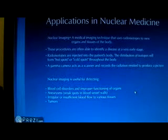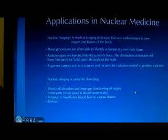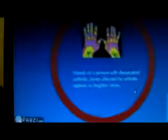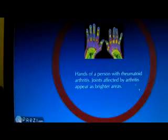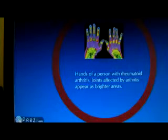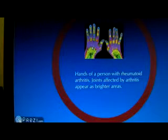Nuclear imaging is also useful for detecting blood cell disorders and improper functioning of organs, aneurysms — which are weak spots in the blood vessel walls — irregular blood flow to various tissues, and tumors. As you can see in this picture, these are the hands of a person with rheumatoid arthritis. The bright areas indicate damaged joints inflicted by arthritis, and these appear as hot spots on the gamma camera.